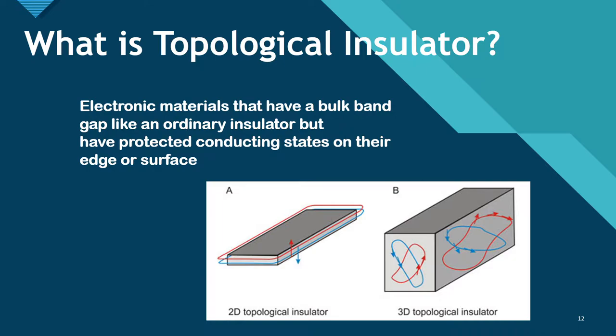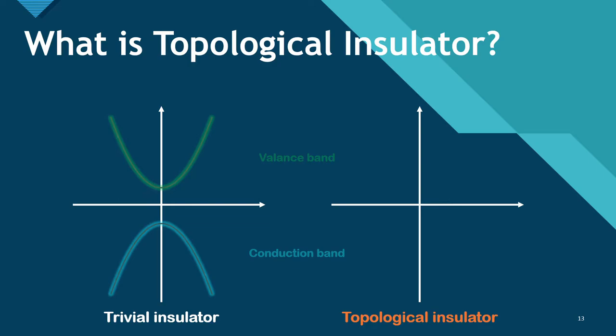So we have come to topological insulator. It is an electronic material that has a bulk band gap like an ordinary insulator, but has protected conducting states on its edge or surface. Let's look at the band diagram. We can see that in a normal insulator, the conduction band and valence band are separated. However, in a topological insulator, these two bands are connected by a surface state, so electrons can relocate.